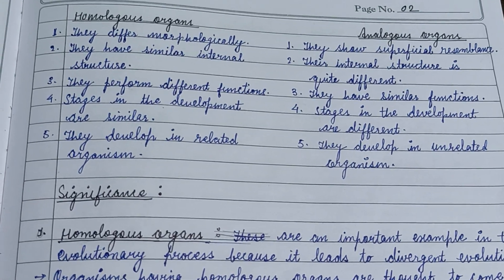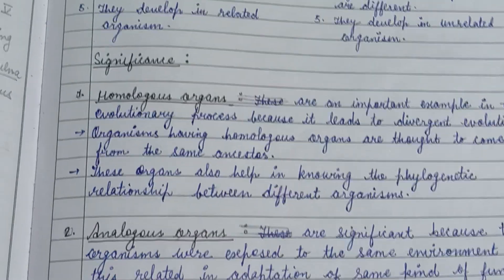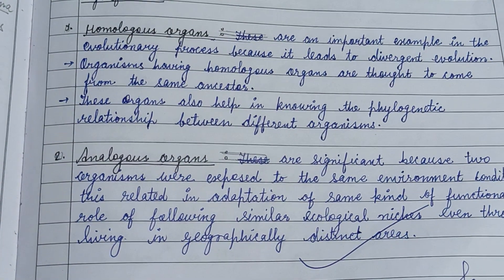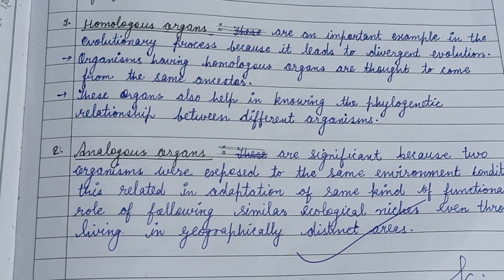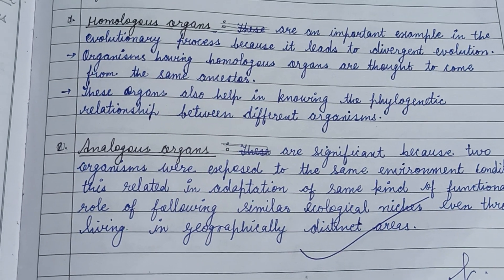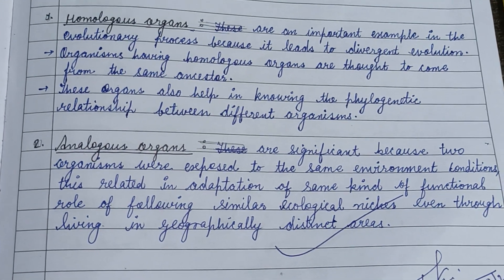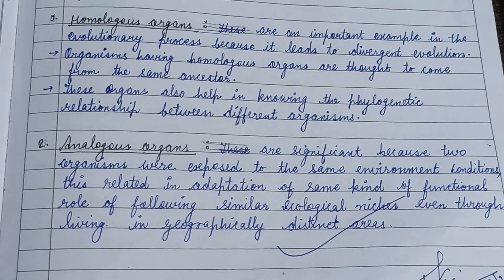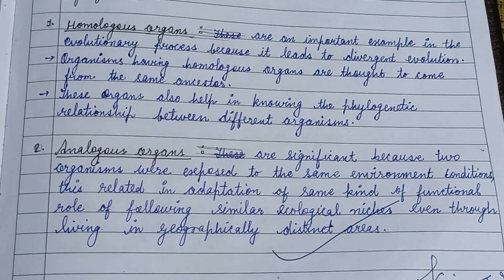Here are some differences between homologous and analogous organs. Homologous organs are an important example in the evolutionary process because they lead to divergent evolution, whereas analogous organs are exposed to the same environmental conditions and are related in the adaptation of the same functional role, following similar ecological niches even while living in geographically distinct areas.